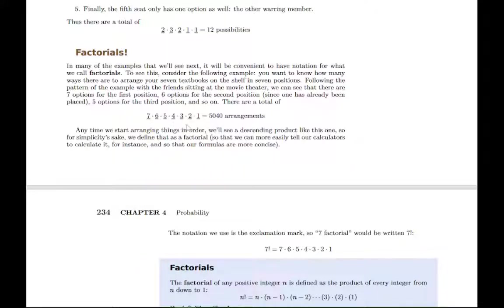So you have this descending product. So you have seven times six times five times four times three times two times one. This pattern shows up a lot when you arrange things in order. So we take a shortcut and we just call this factorial. We call this seven factorial.